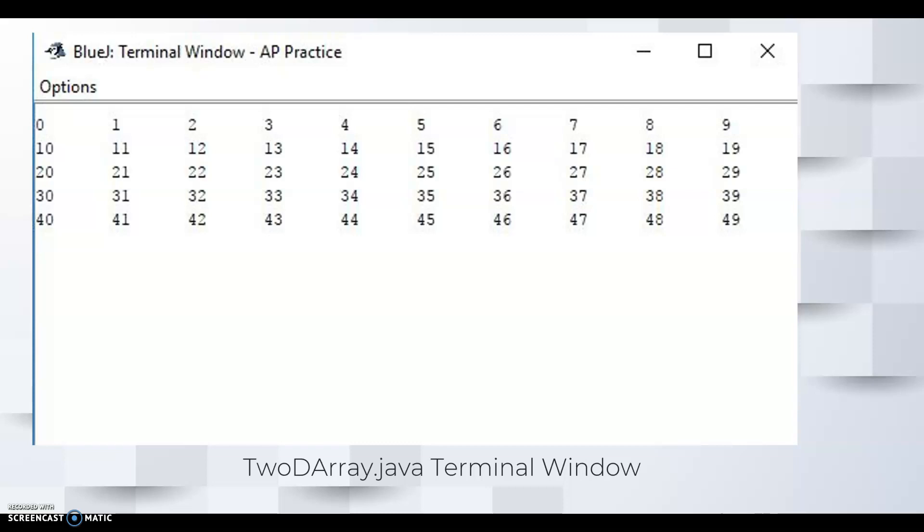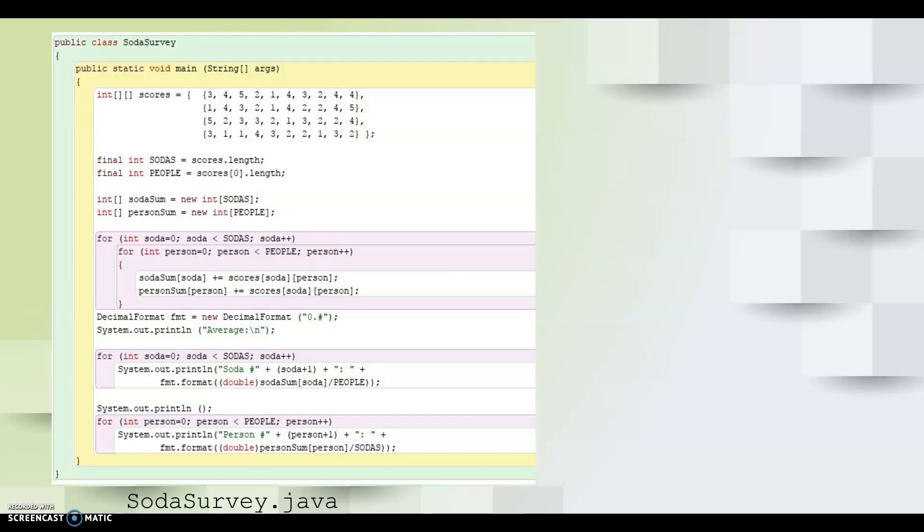Let's take a look at another example. As with one-dimensional arrays, an initializer list can be used to instantiate a two-dimensional array, where each element is itself an array initializer list. This technique is used on the soda survey program shown here.